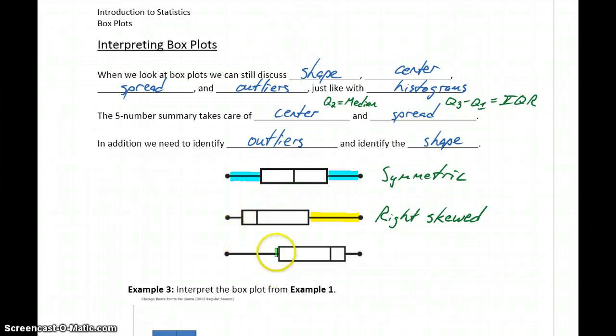And then, as that line extends to the left, we're getting values on the low end that are occurring with less frequency. Now we have a left-skewed distribution.